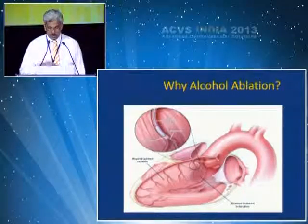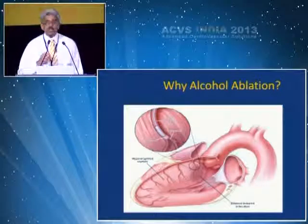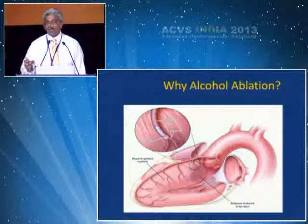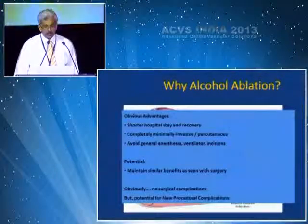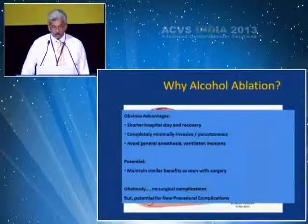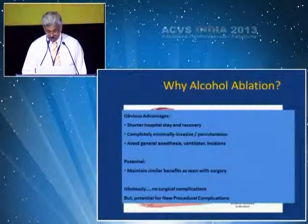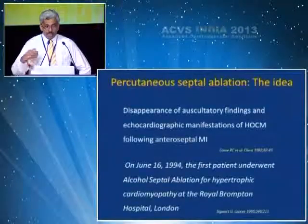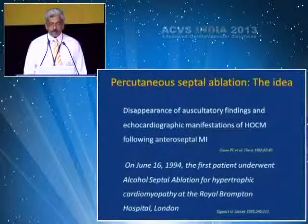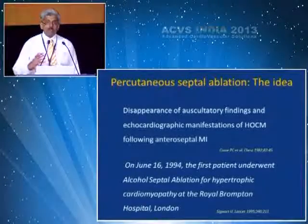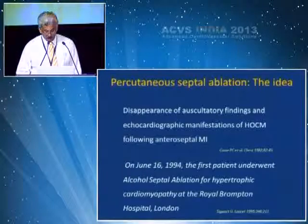Why alcohol septal ablation? Alcohol is delivered through a catheter into the hypertrophic myocardium through a balloon placed in the septal artery, and ethanol induces a chemical infarction in the myocardium. The obvious advantages over surgical myomectomy include shorter hospital stay and recovery, a completely minimally invasive procedure, avoidance of general anesthesia, ventilators, and incisions. As most of science evolves, the idea for alcohol septal ablation came up by serendipity — through the disappearance of auscultatory findings and echocardiographic manifestations of HCM following a patient who had a large anteroseptal MI. This was published in CHEST, after which Dr. Sigvard performed the first alcohol septal ablation in June 1994.